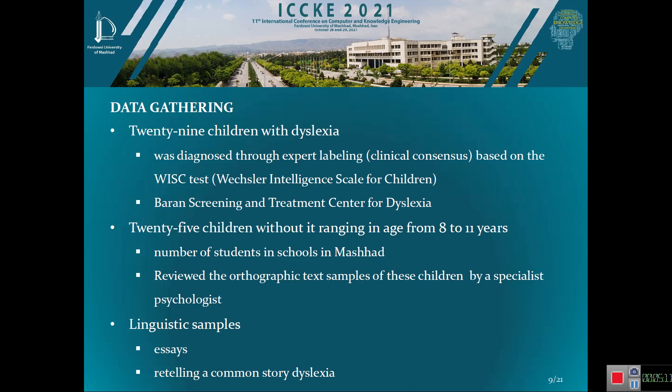In the data collection phase, 29 children with dyslexia diagnosed through expert labeling based on the Bexler test were chosen from the Barron Screening and Treatment Center for Dyslexia. 25 children without dyslexia, ranging in age from 8 to 11 years old, were also selected. Orthographic text samples of these children were reviewed by a specialist psychologist.